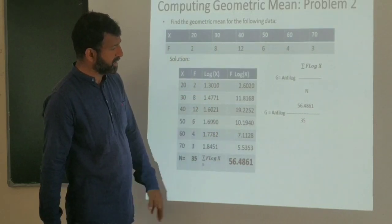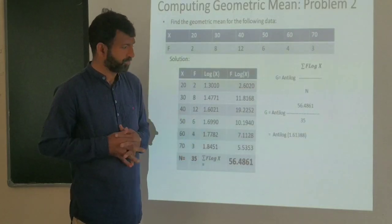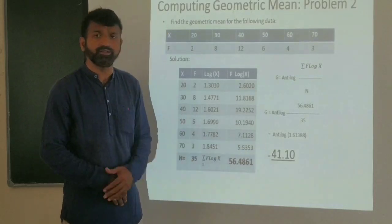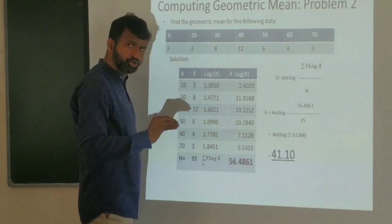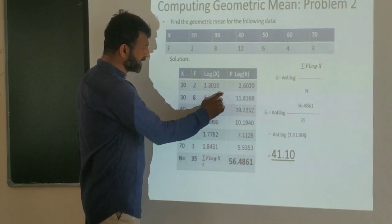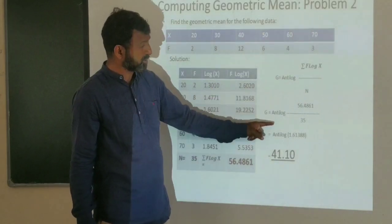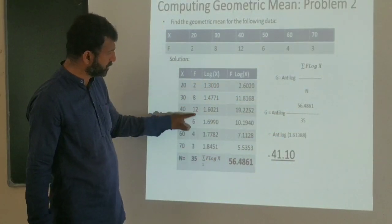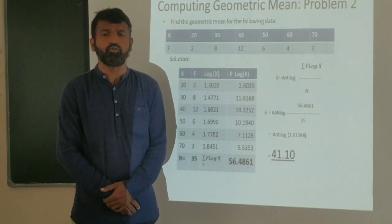Therefore G equals antilog of 56.4861 divided by 35, which equals antilog of 1.6138. The total of the frequency is 35, and capital N equals 35. This gives the geometric mean for the tabular data problem.